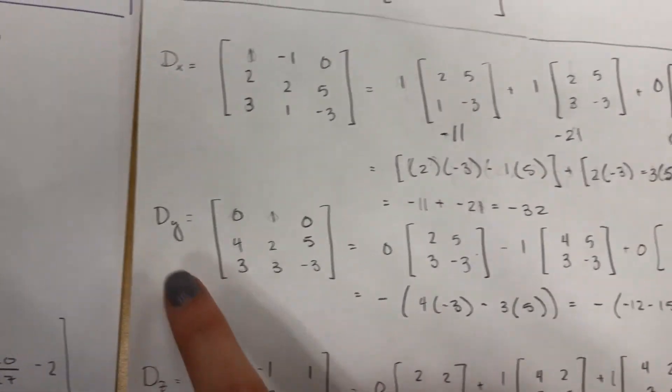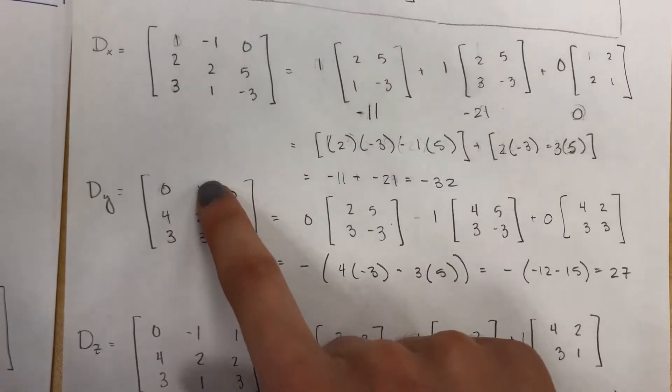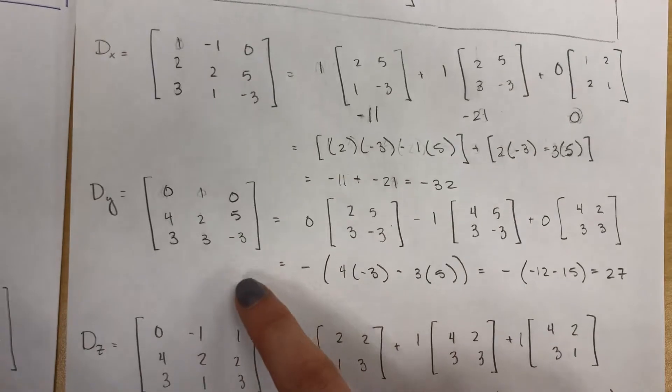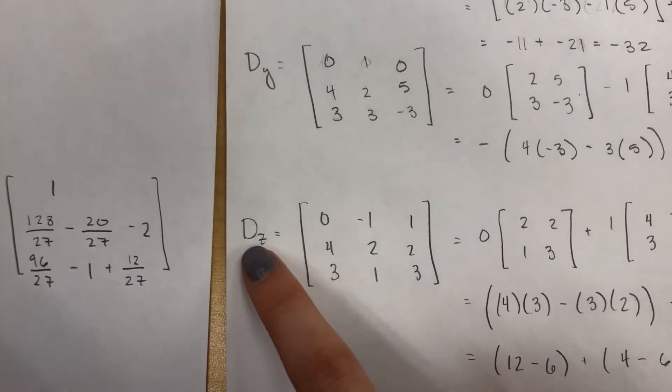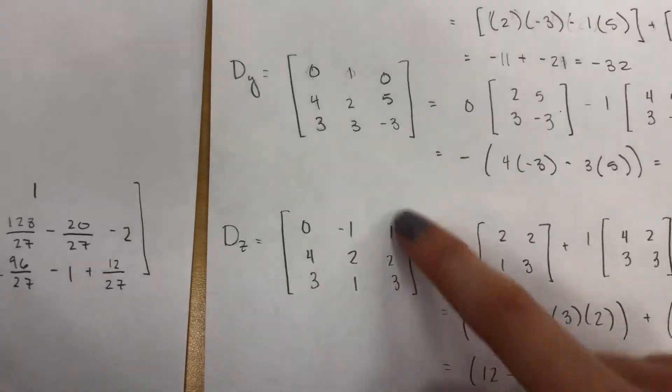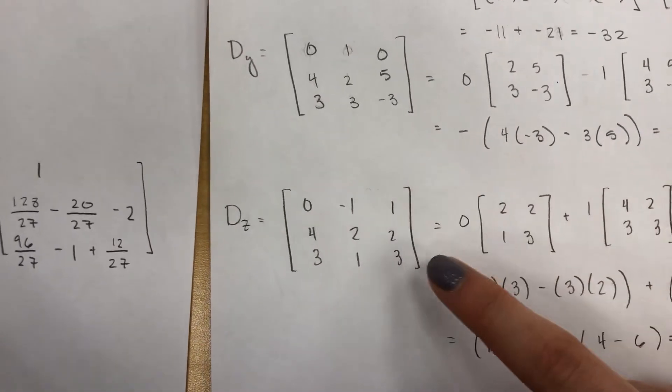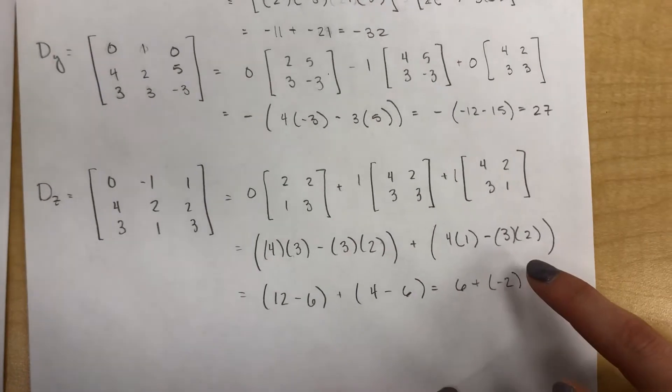Then you do the same thing for Y. Replace the Y vector with B and solve for the determinant. Same thing for DZ, you replace the Z vector with B and solve for the determinant.